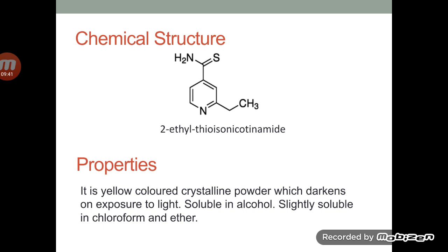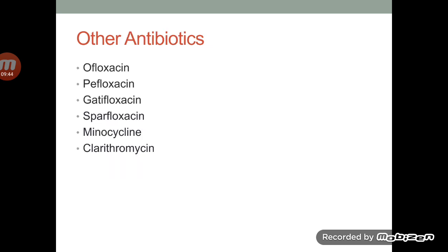The structure of ethionamide shows that the basic nucleus is pyridine. The physical properties are that it is a yellow colored crystalline powder which darkens slowly on exposure to light. It is soluble in alcohol and slightly soluble in chloroform and ether. The various other antibiotics used in the treatment of leprosy are ofloxacin, sparfloxacin, minocycline and clarithromycin.